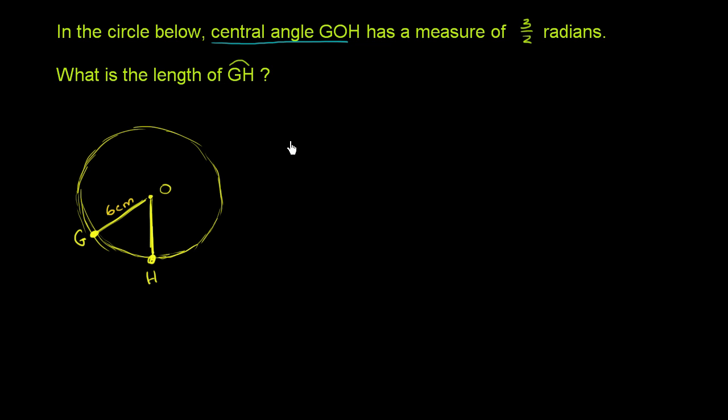So let's define some variables. It'll help us manipulate them a little bit easier. Where is central angle GOH? This GOH, it's this angle right over here. Let's call that theta. So theta is equal to the measure of angle GOH. Now, they're asking us, what's the length of arc GH?